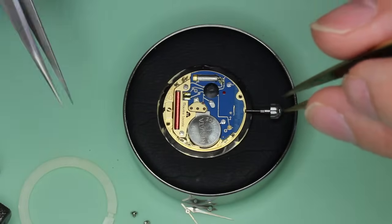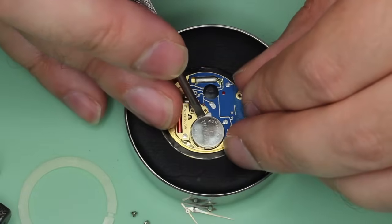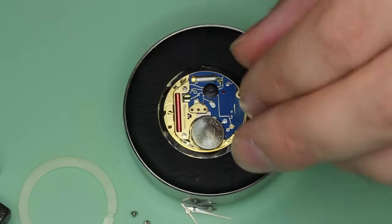As you can see, I've removed the hands and I've unscrewed and removed the movement ring. Now I'm removing the battery.